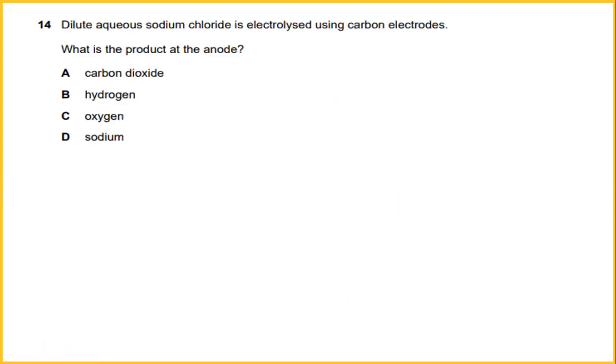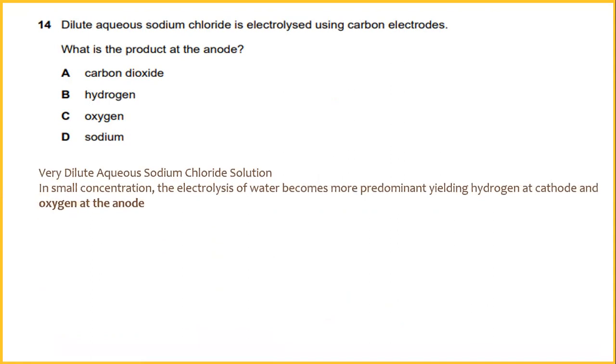Dilute aqueous sodium chloride is electrolyzed using carbon electrodes. What is the product at the anode? With very dilute aqueous sodium chloride solution in a small concentration, the electrolysis of water became more predominant, yielding hydrogen at cathode and oxygen at anode. The answer is C, oxygen.